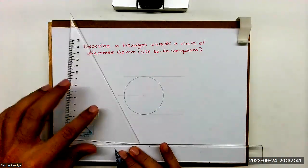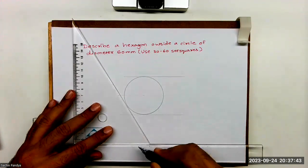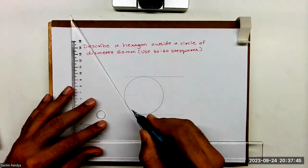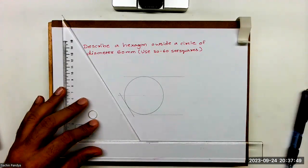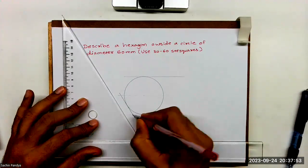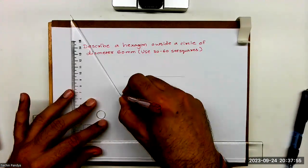Now what I will do, I will keep set square like this and I will draw a line like this. So wherever it will cut, see this, wherever it will cut this horizontal line from here to here, this is the side of the hexagon.